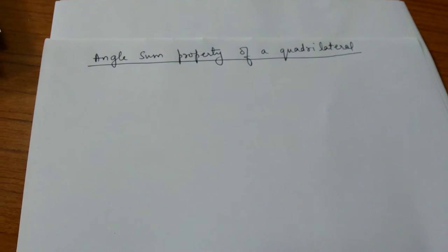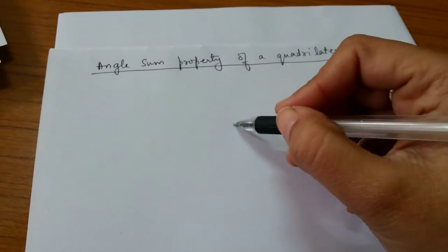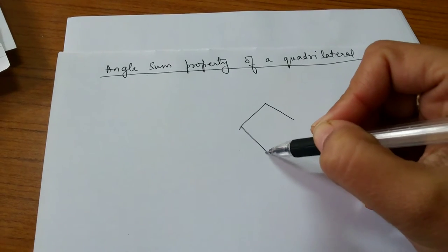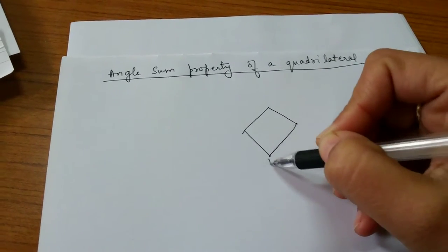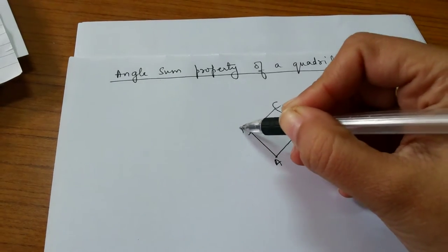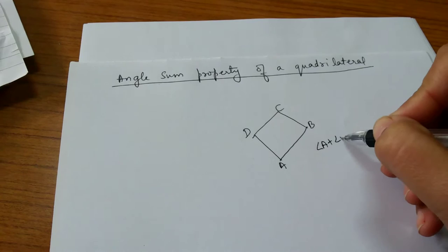What is the angle sum property of a quadrilateral? It says that in a quadrilateral ABCD, the sum of the interior angles angle A plus angle B plus angle C plus angle D is 360 degrees.